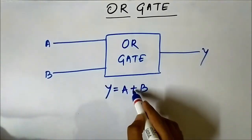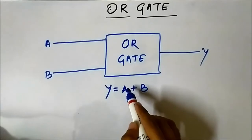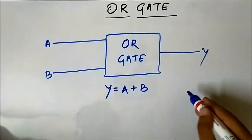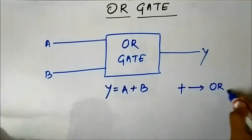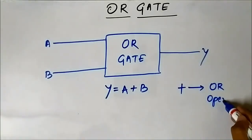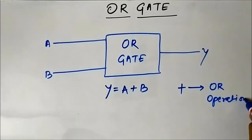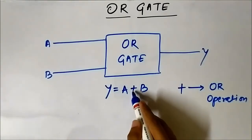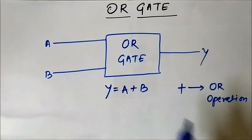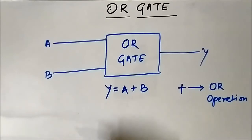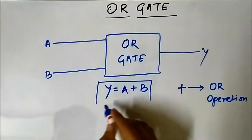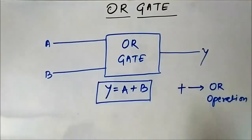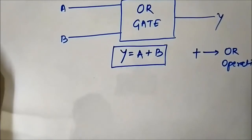The output is called A OR B. This plus sign represents the OR operation — the logic OR operation. A OR B performs the addition of the two input logic levels, that is A and B. So this is the output format of the OR gate.